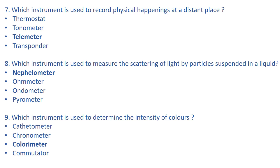The right answer is colorimeter. Colorimeter is an instrument used to determine the intensity of color. Cathetometer is an instrument used to determine height. Let's also look at the other options.